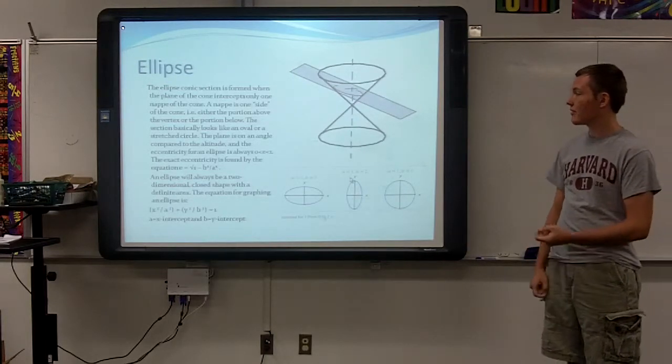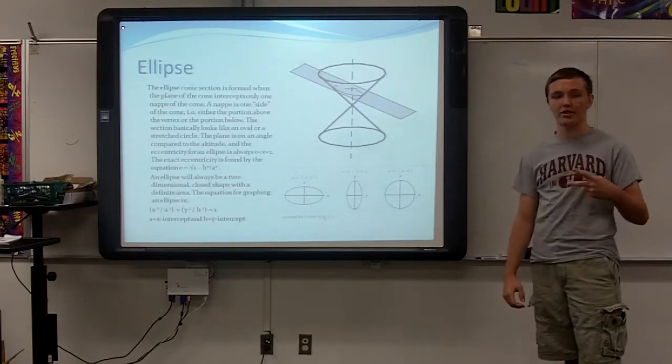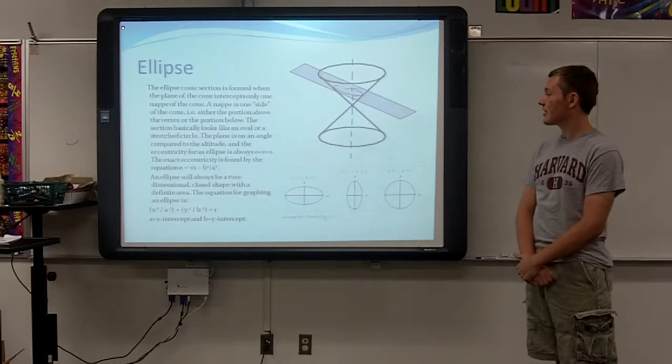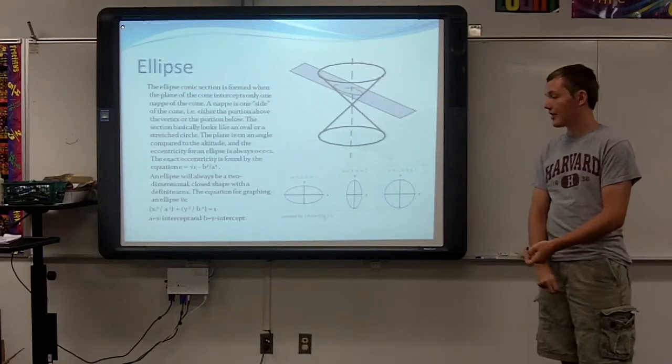The section basically looks like an oval or a stretched circle. The plane is on an angle compared to the altitude, and the eccentricity for an ellipse is always either greater than zero or less than one. The exact eccentricity is found by the equation, which is the square root of one minus b squared over a squared.